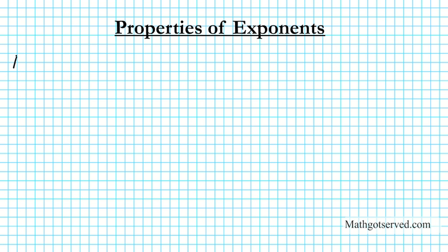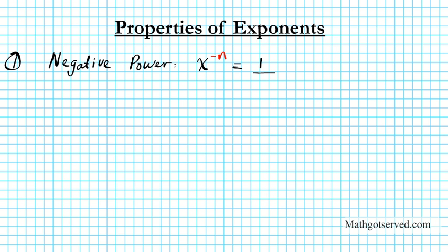The first one we're going to look at is the negative power property. So let's say we have x raised to the negative n. Well, if you have x raised to the negative n, it basically means you can reciprocate this variable right here. It's going to be 1 over x to the n. So anytime you have a negative in the exponent, you can reciprocate the term that has a negative exponent.